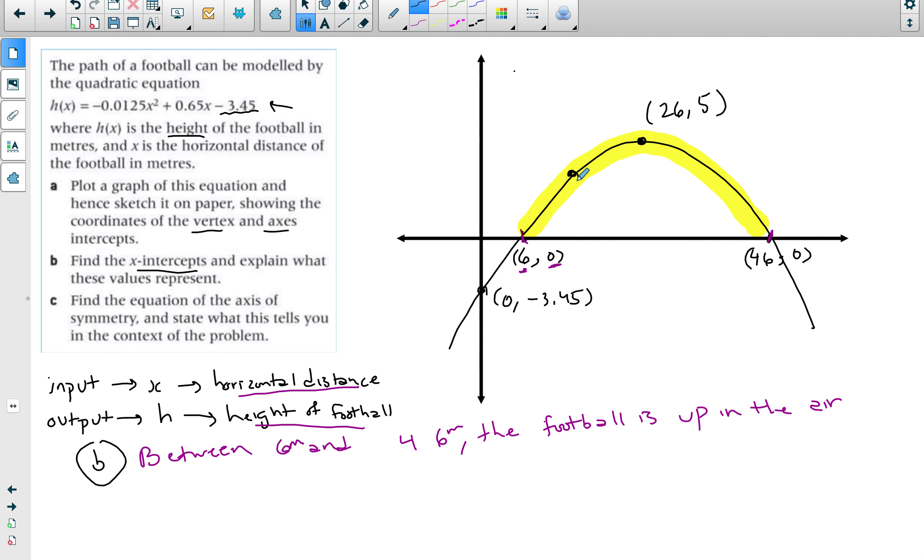Because everything else here is a negative value, everything in the yellow is a positive value. So if I pick any other coordinate here, the output will be a positive number, so if there is a height happening here. Otherwise here it's going to be a negative height which doesn't make sense.